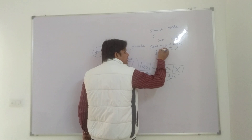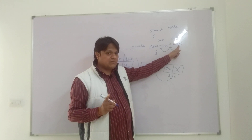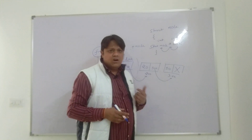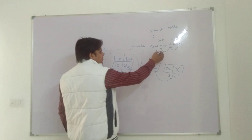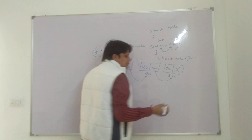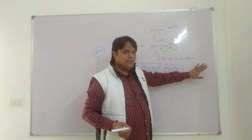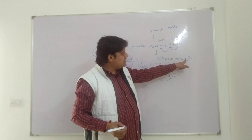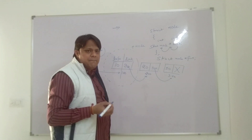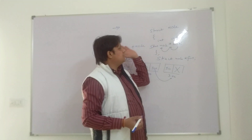So 'link' is a pointer pointing to the structure itself. When a member of a structure points to the structure itself, it is called a self-referential structure. Trees, graphs, and linked lists are all examples of self-referential structures. We also declare 'struct node* first' as our structure variable. Remember, you cannot initialize members of a structure directly. If the variable is a pointer, you use the arrow operator to access members; if it's a normal variable, you use the dot operator.